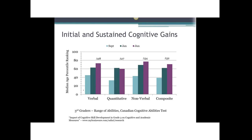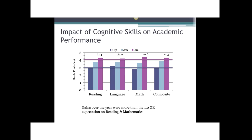There is a tremendous difference between a group performing at the 40th percentile and one at the 70th percentile. In addition to the CCAT, schools in Canada also administered the Canadian Test of Basic Skills, with scores expressed as grade equivalents. The average scores were a bit below grade level at the beginning of the year, but significantly above grade level at the end of the year — so these cognitive gains are translating into improved academic performance.